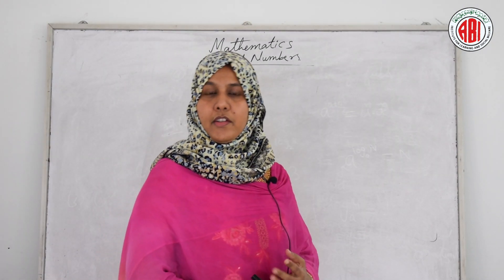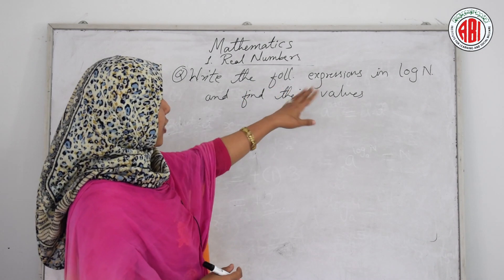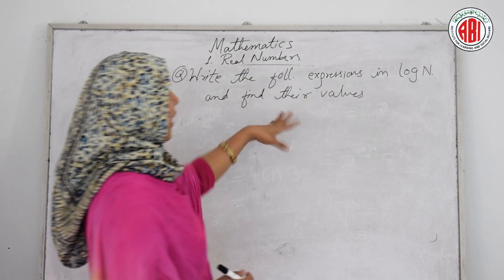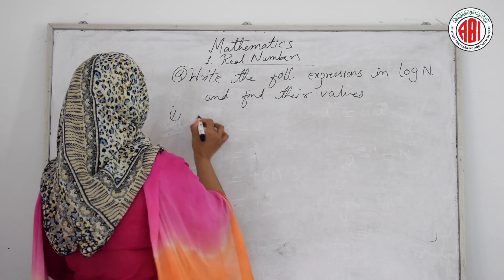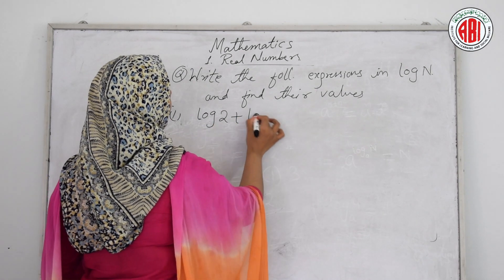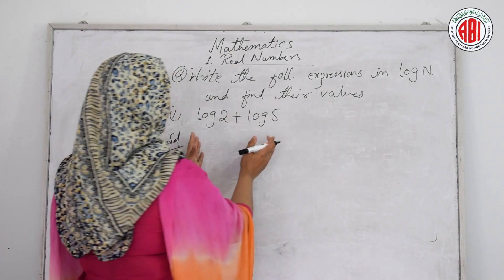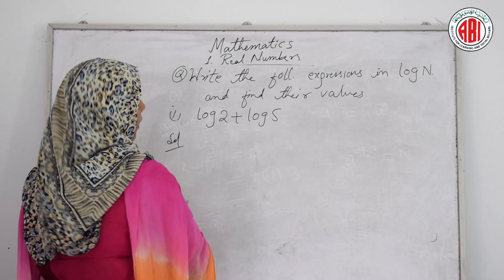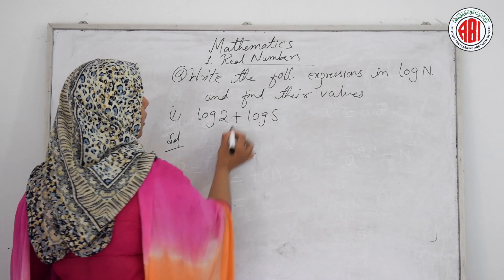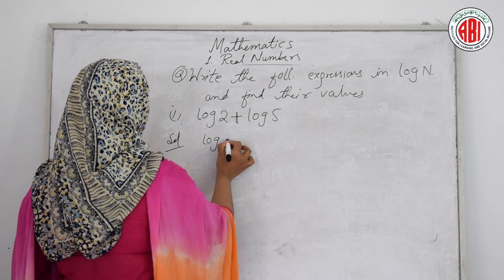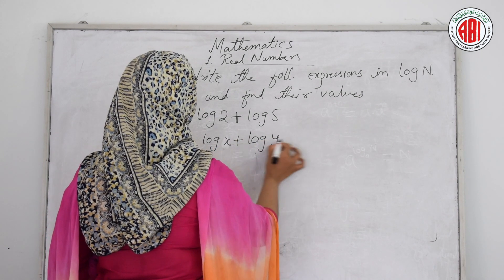Now the question is: write the following expressions as log n and find their values. First: log 2 plus log 5. If base is not given, we understand base is 10. We use the property: log x plus log y = log(xy).